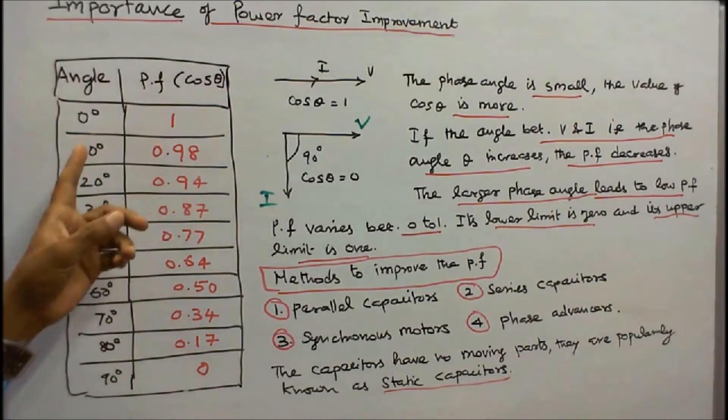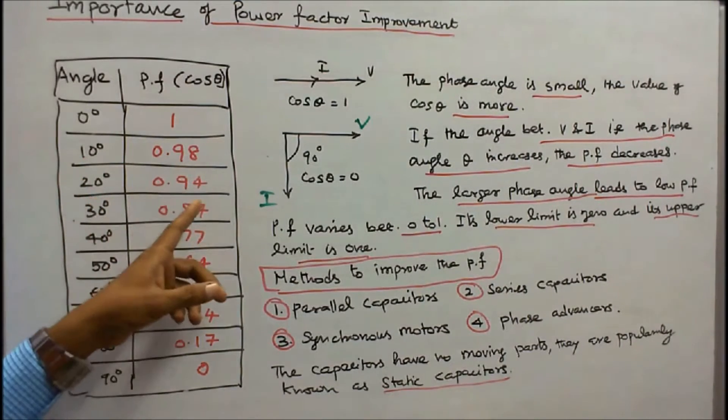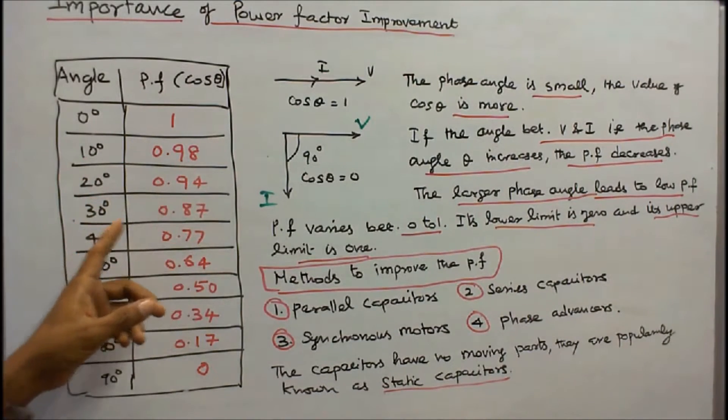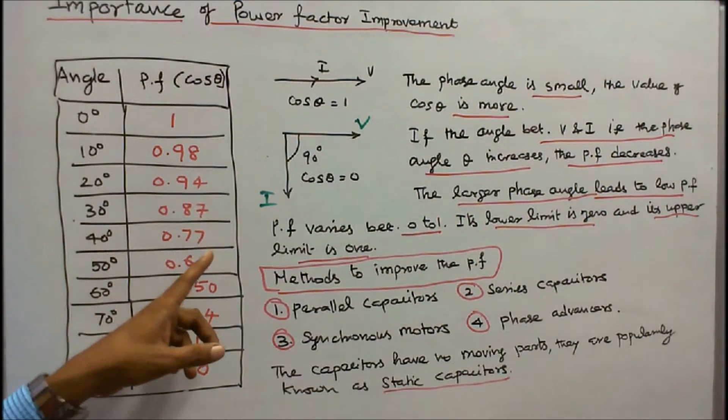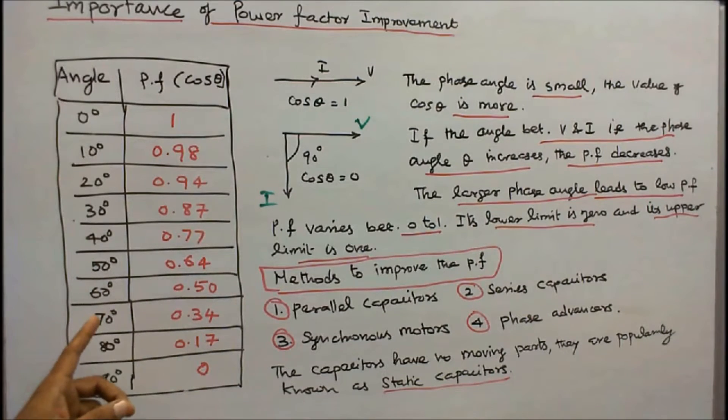Cos 10° = 0.98, Cos 20° = 0.94, Cos 30° = 0.87, Cos 40° = 0.77, Cos 50° = 0.64, Cos 60° = 0.5, Cos 70° = 0.34, Cos 80° = 0.17, Cos 90° = 0.